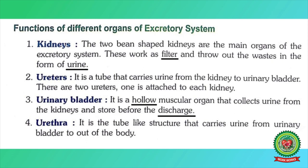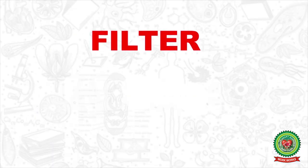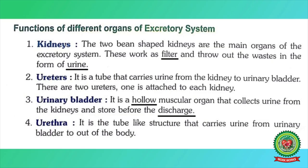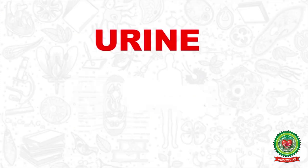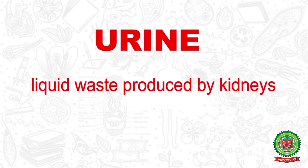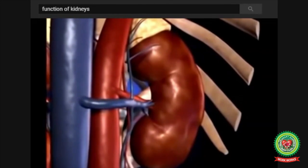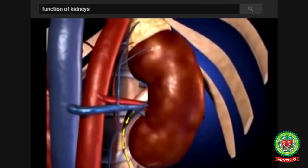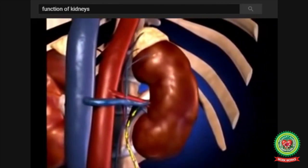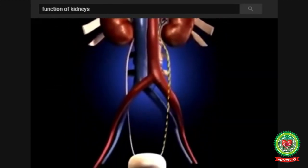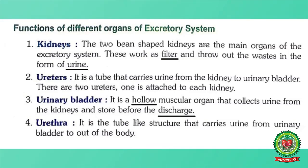The kidneys work as filters and throw out waste in the form of urine. Underline 'filter' — meaning: a porous device for removing impurities. Underline 'urine' — meaning: liquid waste produced by the kidney. Our kidneys act like a filter because they help in the removal of waste from our body, and this waste is removed in the form of urine.